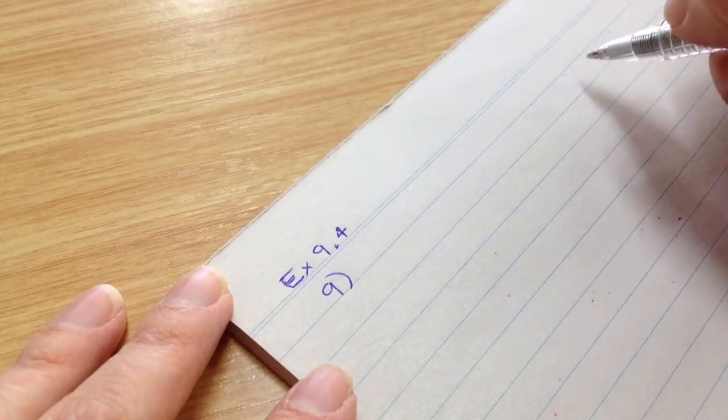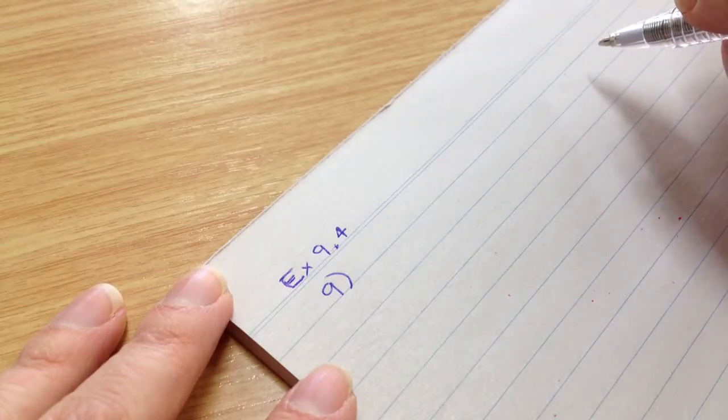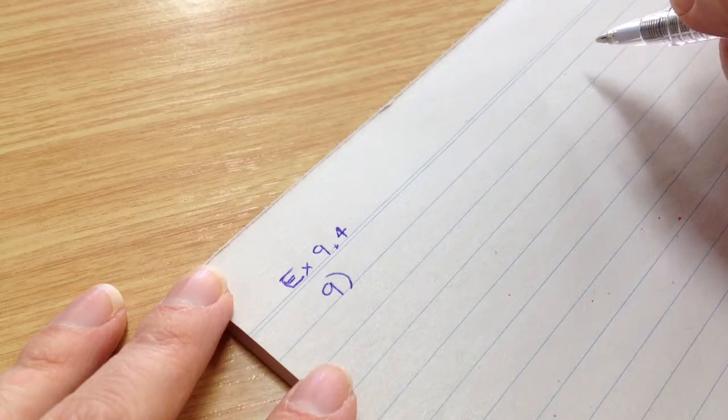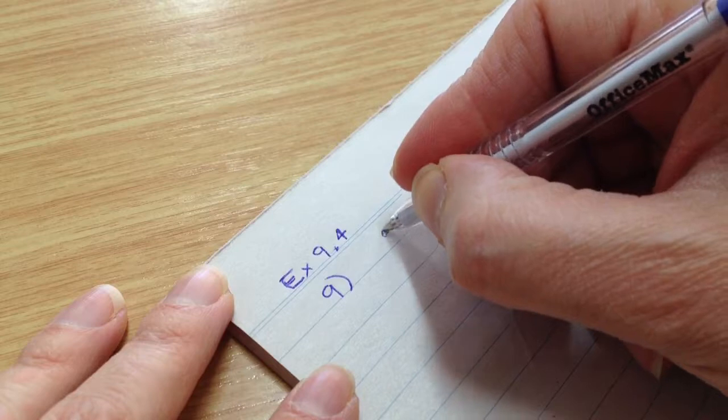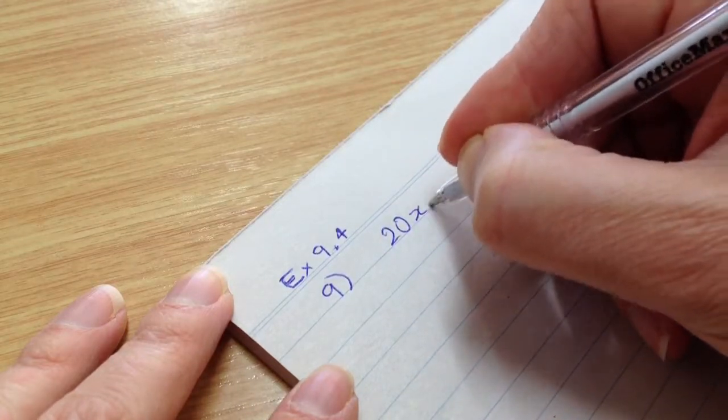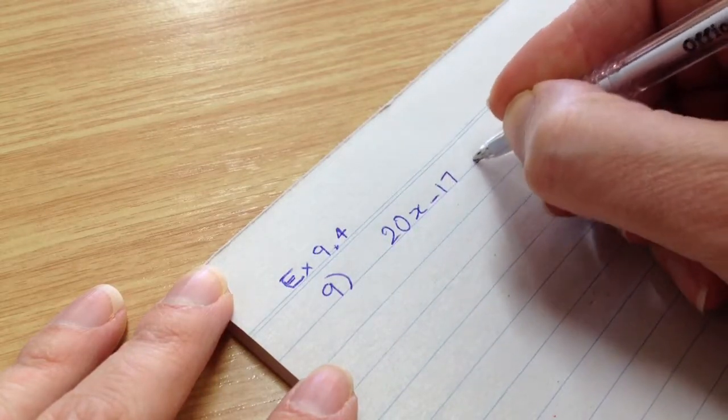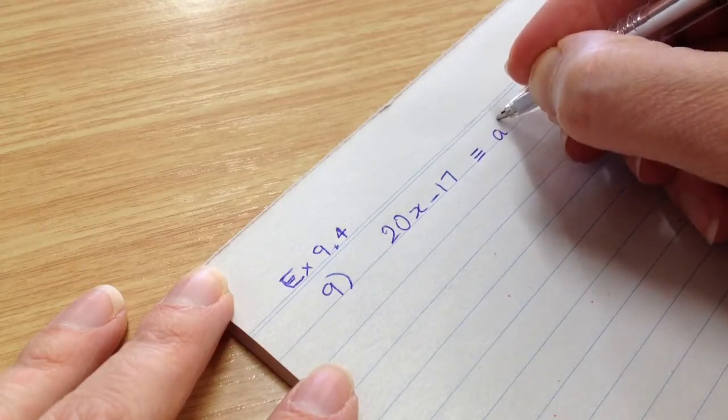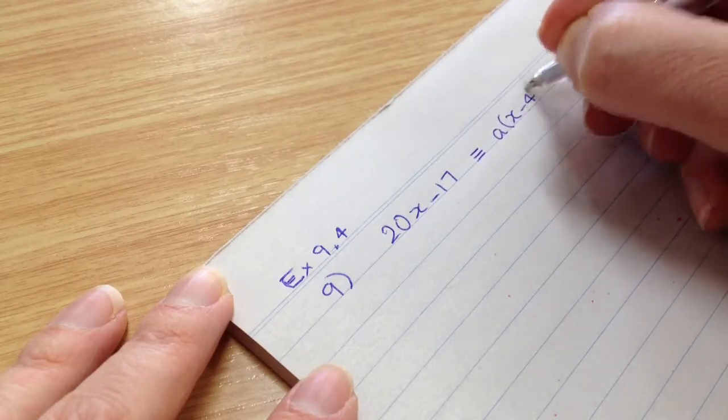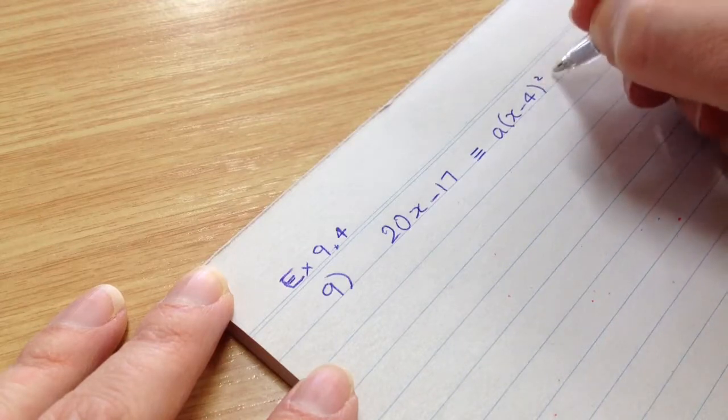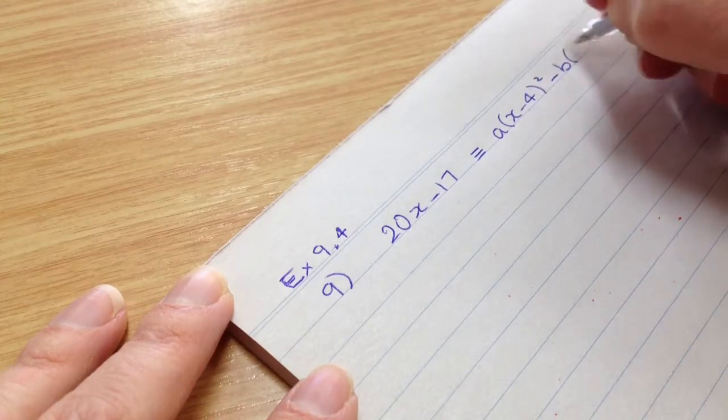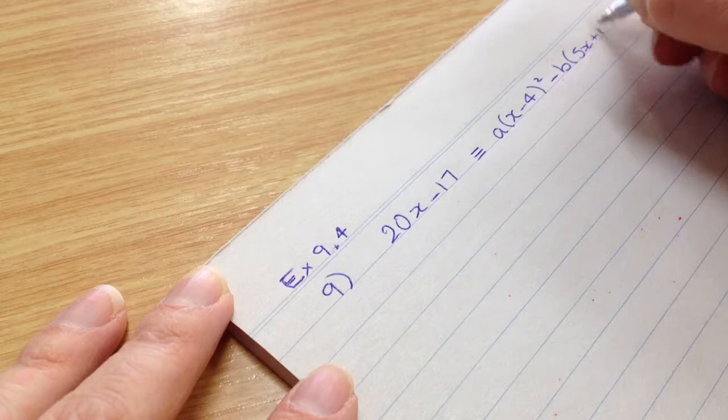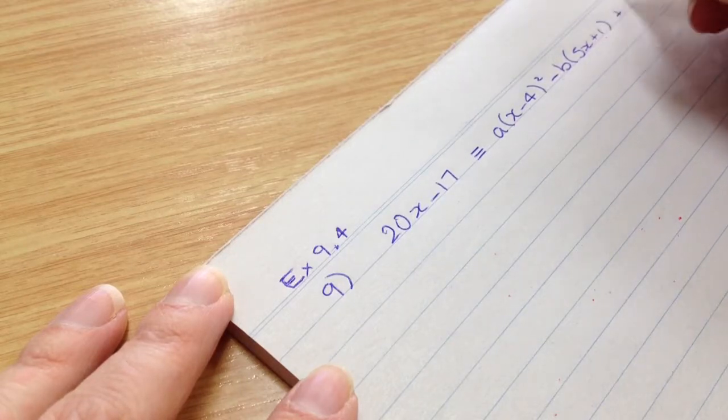Okay, this is question 9 in exercise 9.4. The question says, find the values of a, b and c if 20x minus 17 is equivalent to a bracket x minus 4 squared minus b bracket 5x plus 1 plus c.